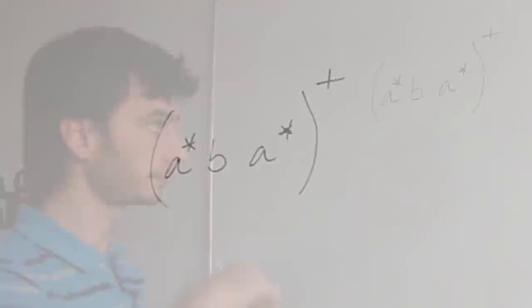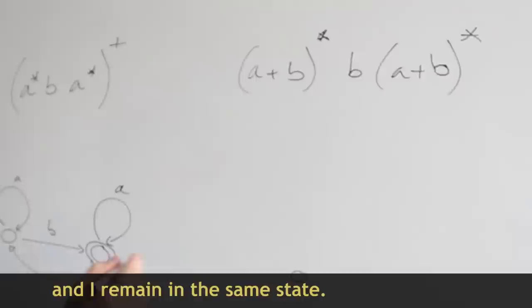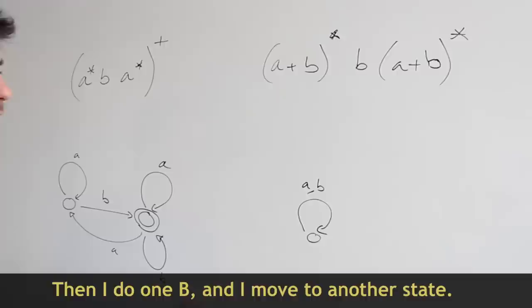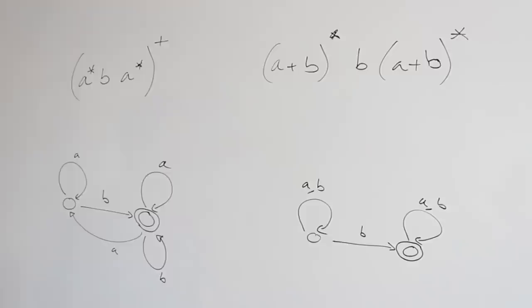Now let's compare that regular expression search with another one. Here I have a state, a starting one, where I can do either a or b and I remain in the same state. So I will do either a or b, then I do one b and I move to another state. And in this state I can do as many a's or b's as I want, and this one is accepting.